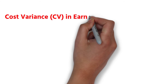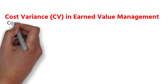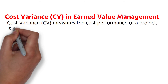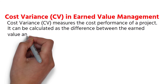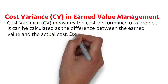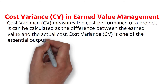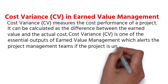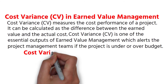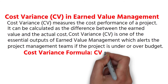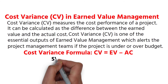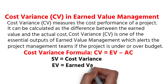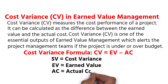Cost Variance in Earned Value Management. Cost Variance measures the cost performance of a project. It can be calculated as the difference between the earned value and the actual cost. Cost Variance is one of the essential outputs of Earned Value Management, which alerts the project management teams if the project is under or over budget. Cost Variance Formula: CV = EV − AC. CV equals Cost Variance. EV equals Earned Value. AC equals Actual Cost.